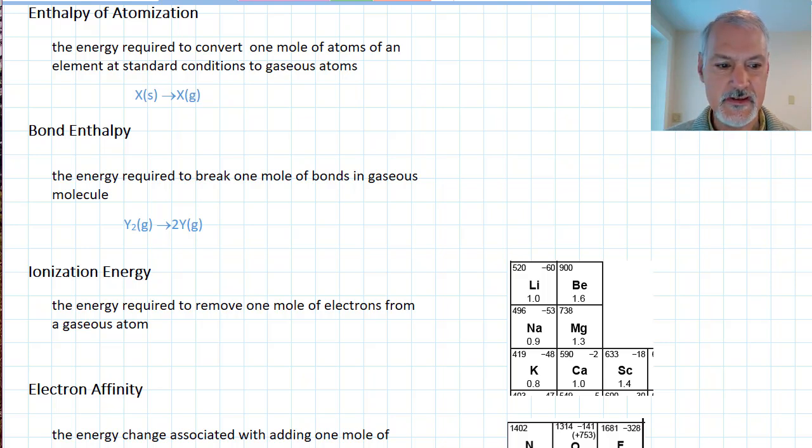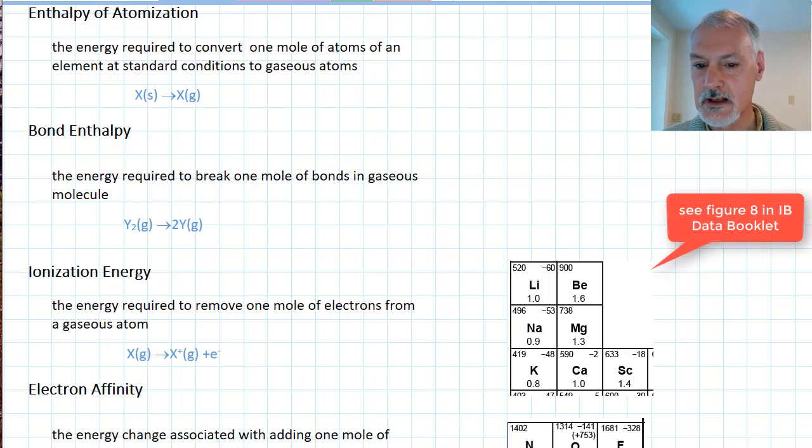Then we turned our species into ions. So first of all, back to our metal X. We did that by removing an electron. That removal of an electron requires energy, and that energy is given in our IB data booklet. But these values in this corner represent the first ionization energy, the energy required to remove the first electron.